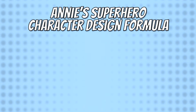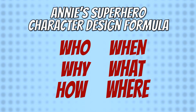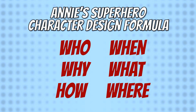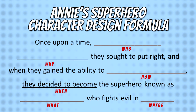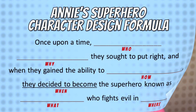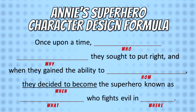When it comes down to it, my superhero formula is actually quite simple. I just take all the six question words that we're all used to, that we've learned from elementary school, and plug them into a Mad Libs-style synopsis sentence, which kind of just summarizes the entire character and their key plot points and powers into one simple sentence. So let's take a look at the whole thing in context, and answer the questions: who, why, how, when, what, and where.